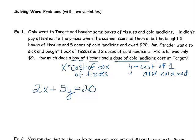And now we have Mr. Strader. So notice we kept all the Onyx stuff together, now we're going to talk about Mr. Strader. He only bought one box of tissues, which we're not sure how much it costs, so that's just X. But he also bought two doses of cold medicine at Y dollars each, and his total was nine. So we could solve this, now that we have a system set up.